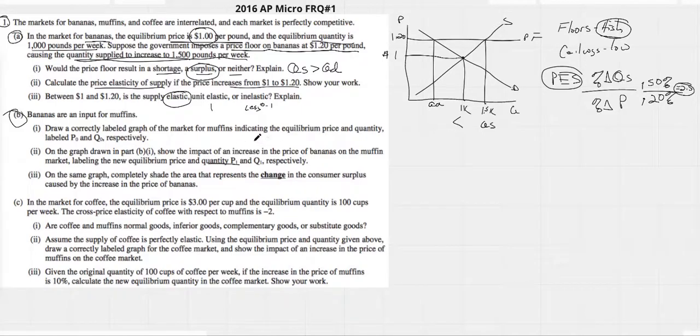Draw a correctly labeled graph of the market for muffins indicating the price and quantity labeled P0Q0. Easy enough. Supply. P0. Q0. All right.